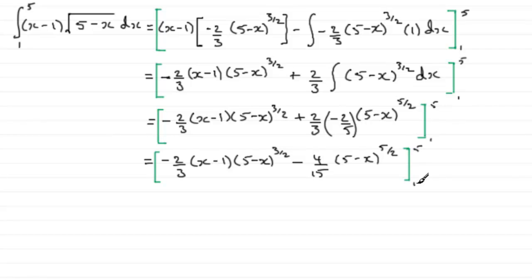So we just pick this up now from this stage here. All we need to do is substitute 5 in first of all and then subtract what we get when we put 1 through. And if you put 5 through here, you can see that this bracket here is going to be 0. So the first part here is just going to simply be 0.